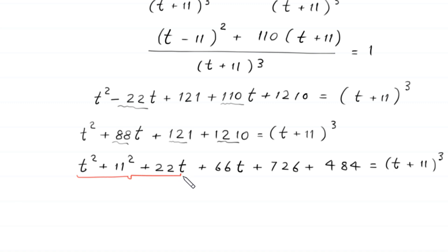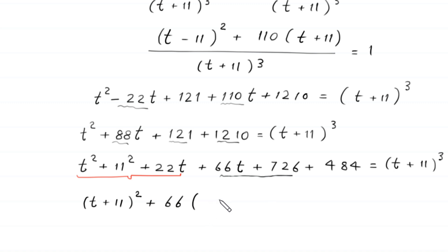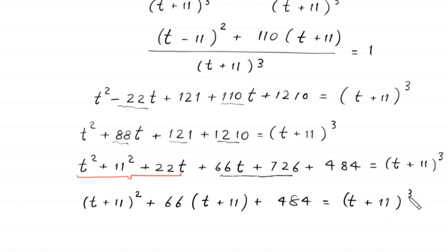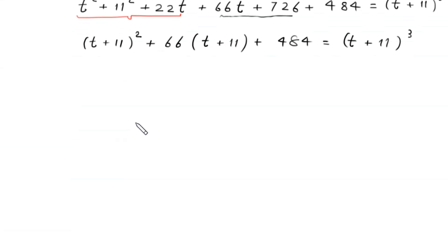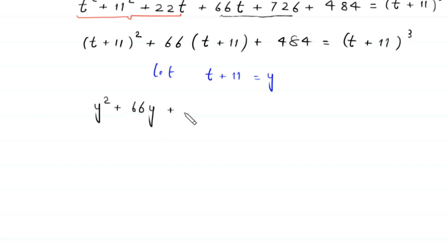Now t squared plus 11 squared plus 22t becomes t plus 11 whole squared. From the remaining terms we factor out 66, giving 66 times t plus 11, plus 484, equal to t plus 11 whole cubed. Substituting y for t plus 11, this equation becomes y squared plus 66y plus 484 equals y cubed.